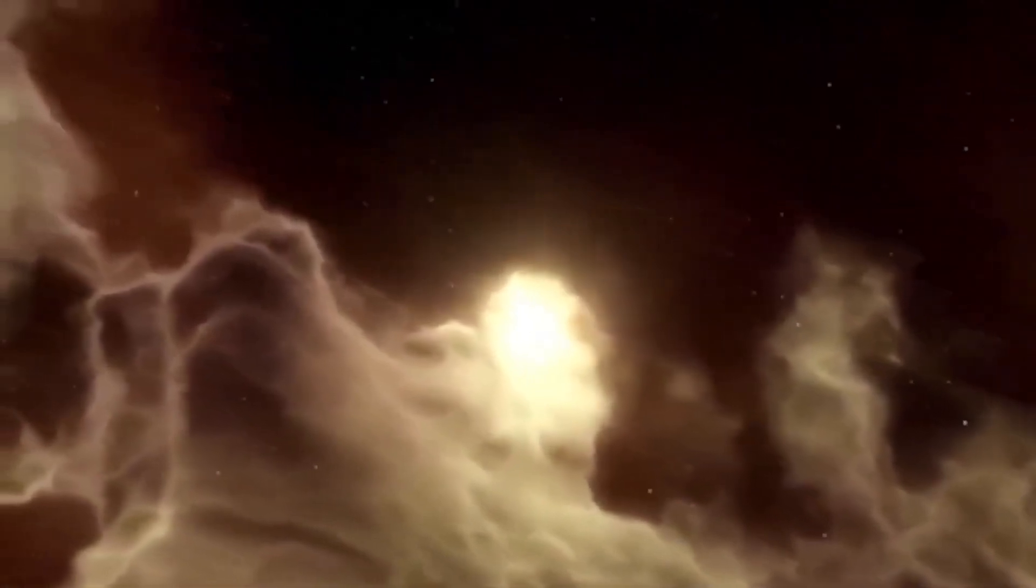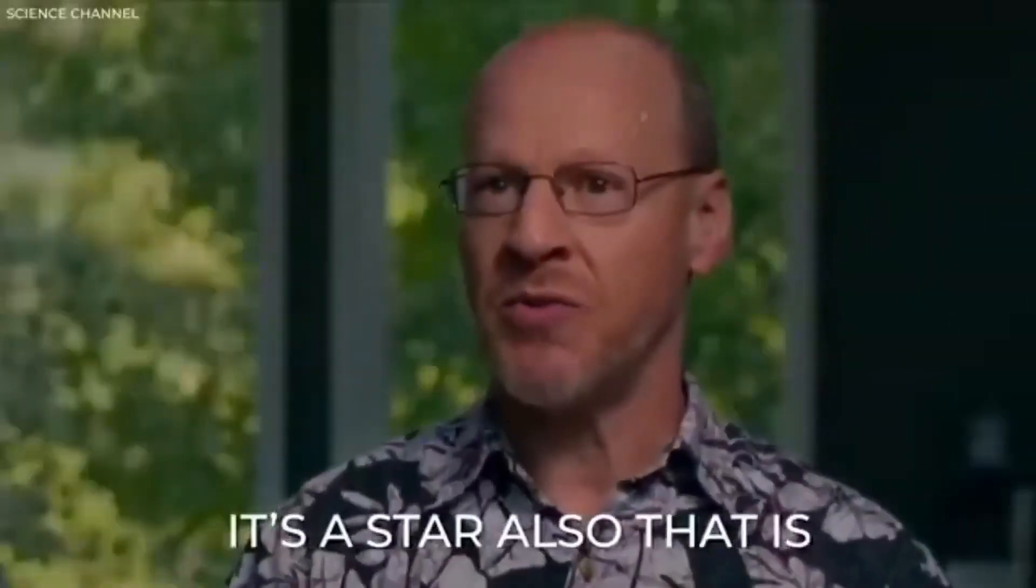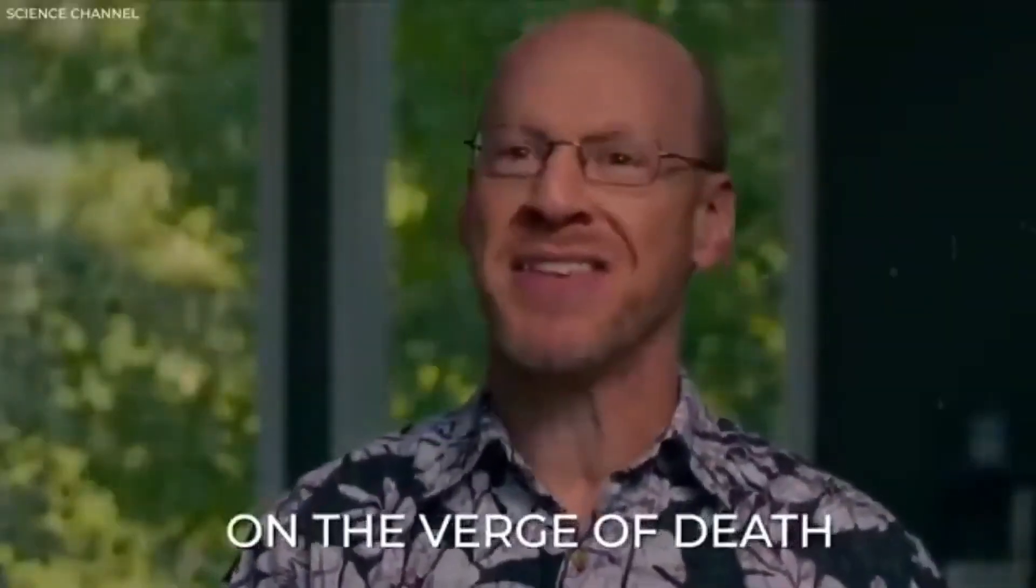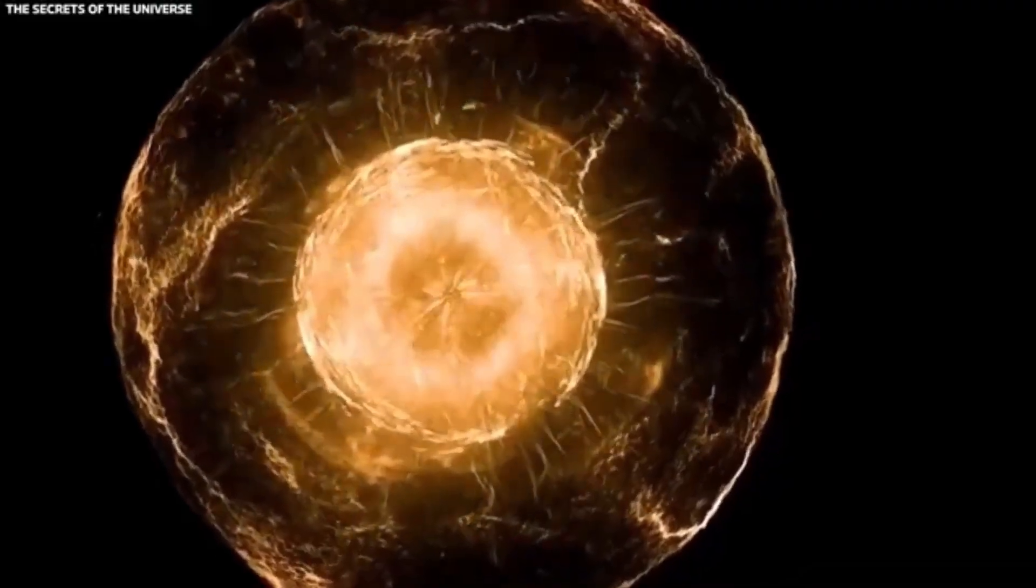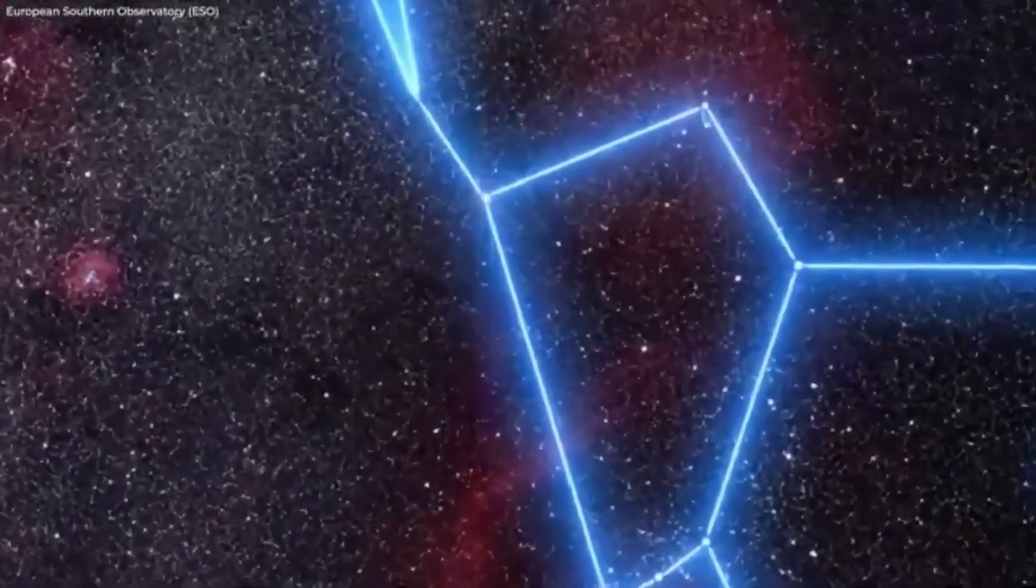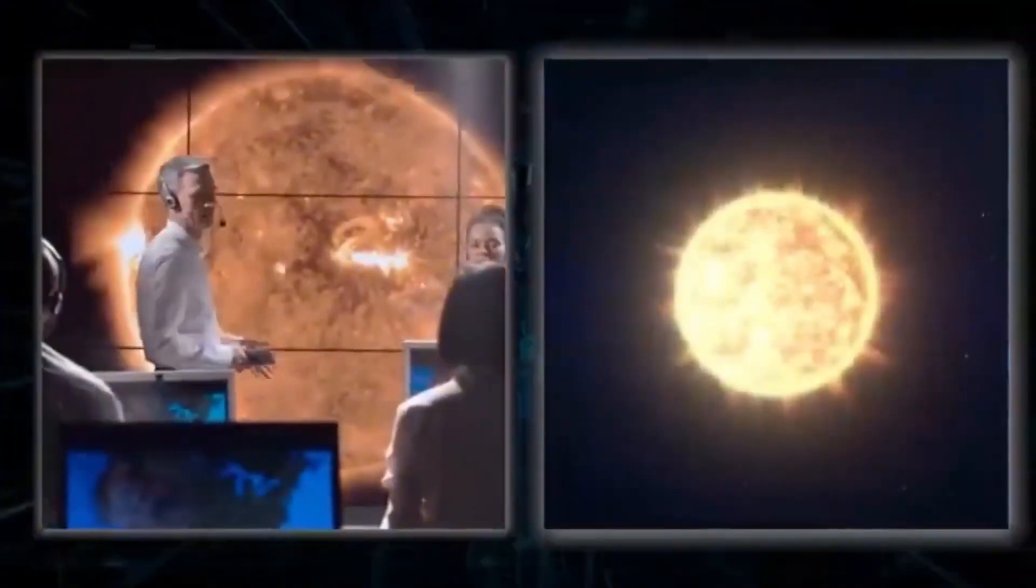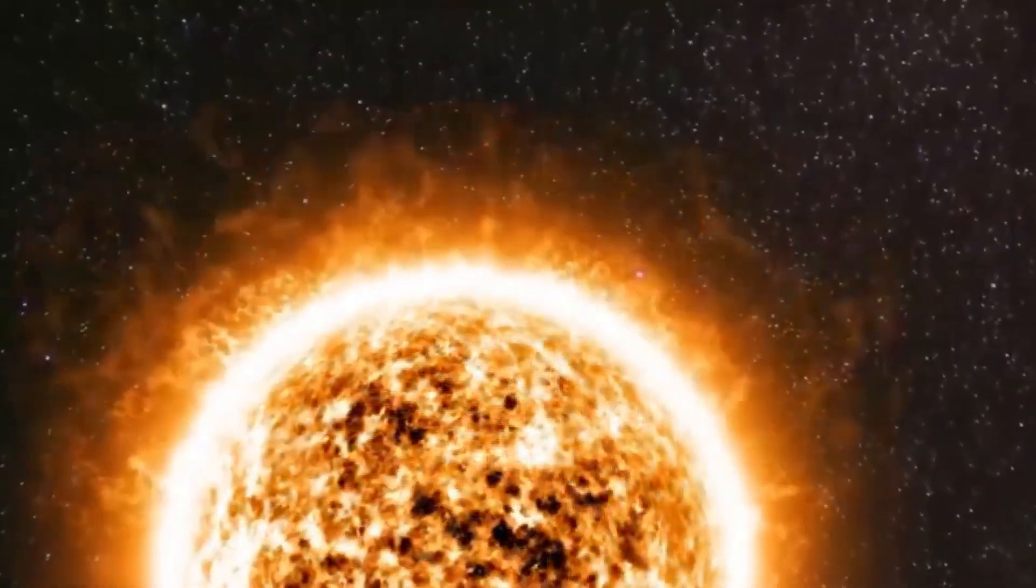The data from Webb suggests that Betelgeuse's collapse may not be entirely uniform. There are magnetic field disruptions, plasma voids, and a possible asymmetric fallback, where material doesn't escape into space but is drawn back inward. Some astrophysicists are even speculating about a transitional object, a phenomenon that sits between a neutron star and a black hole, theorized but never observed. If Webb has caught this in action, it would be the first direct evidence of a new class of cosmic object.